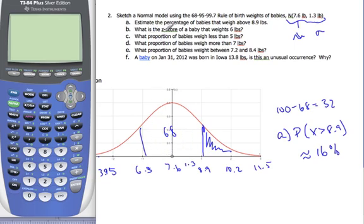So now we want to know what's the z-score of a baby that weighs 6 pounds. Well, z is equal to x minus mu over the standard deviation, which in this case, x is 6. This 6 here minus mu is 7.6 over 1.3.